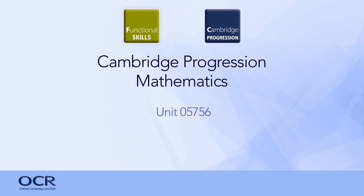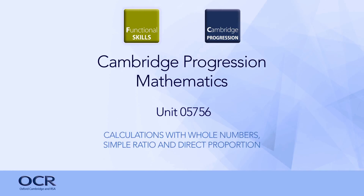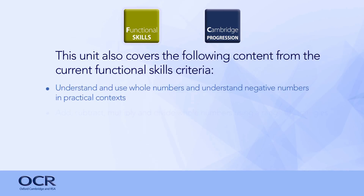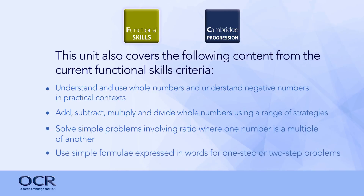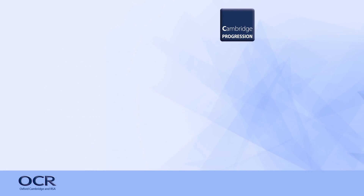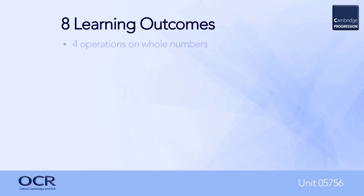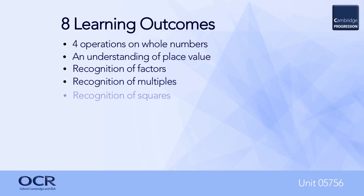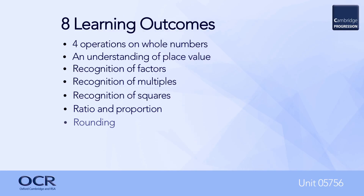This film outlines Cambridge Progression Maths, Unit 05756, calculations with whole numbers, simple ratio and direct proportion. There are eight learning outcomes which assess the following: the four operations on whole numbers, an understanding of place value, recognition of factors, multiples and squares, ratio and proportion, rounding and simple problem solving. Each will be discussed in turn.